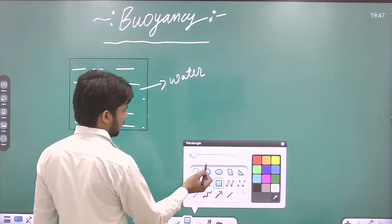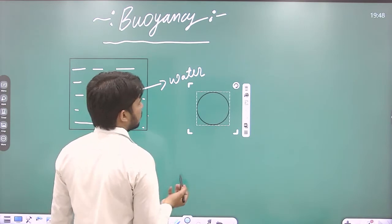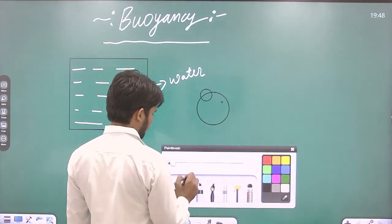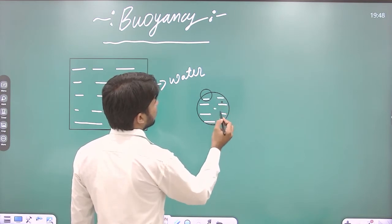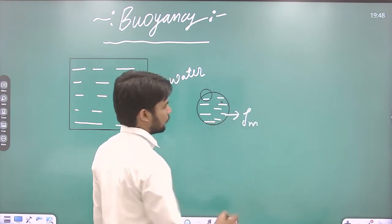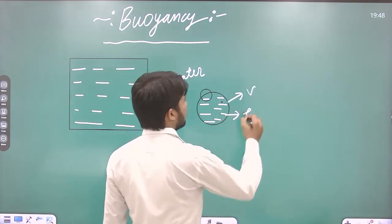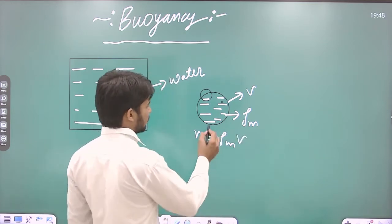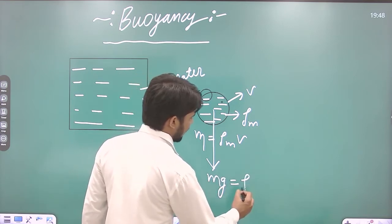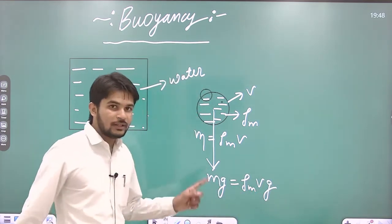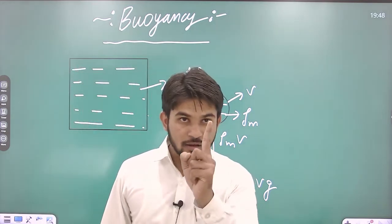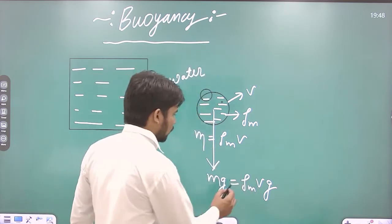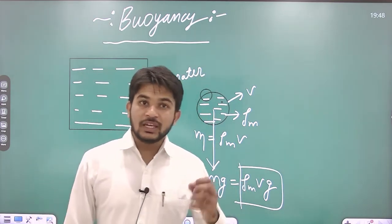This object has some material. Let us say the density of this material is ρm and its volume is V. So the mass of this object is ρm × V, and the weight of this object is downward — that is mg, which can be written as ρm × V × g. This is the weight we feel in open air.